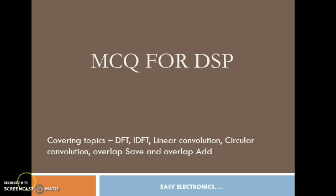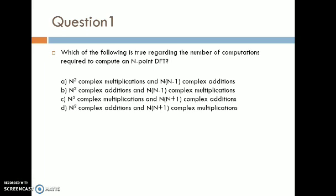The first question is: which of the following is true regarding the number of computations required to compute an N-point DFT? The options are: A) N² complex multiplications and N(N-1) complex additions; B) N² complex additions and N(N-1) complex multiplications; C) N² complex multiplications and N(N+1) complex additions; D) N² complex additions and N(N+1) complex multiplications. To answer this question, you have to think of the DFT equation.